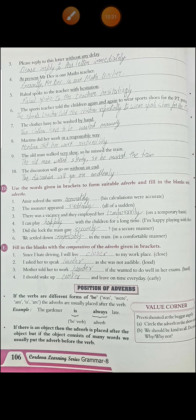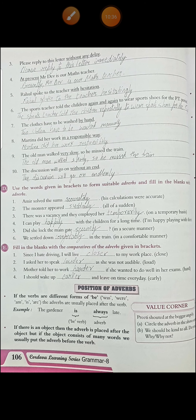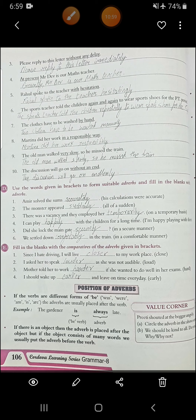See Exercise D — use the word given in the bracket to form suitable adverbs and fill in the blanks. First: 'Amir solved the sum accurately.' Second: 'The monster appeared suddenly.' Third: 'There was a vacancy and they employed her temporarily.' Fourth: 'I can play happily with the children for a long time.' Fifth: 'Did she lock the main gate securely?' Sixth: 'We settled down comfortably in the train.'